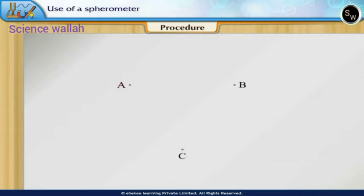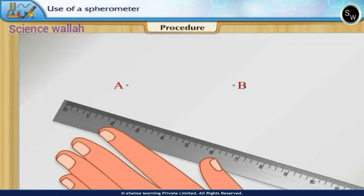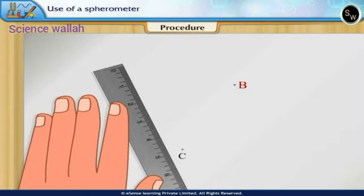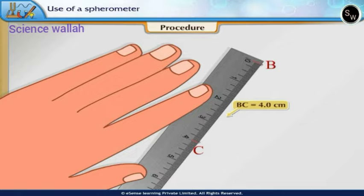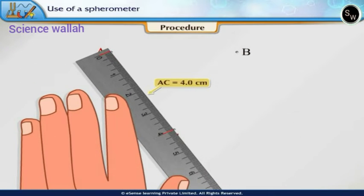Measure the distances AB, BC, and AC using the scale. AB = 4.0cm, BC = 4.0cm, AC = 4.0cm.